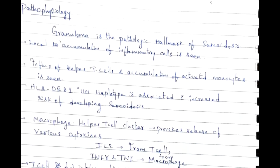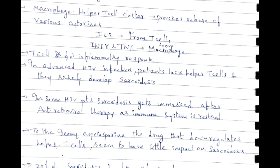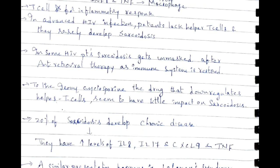Regarding pathophysiology, granuloma is the pathological hallmark of sarcoidosis. There is local accumulation of inflammatory cells — influx of helper T-cells and accumulation of activated monocytes. HLA-DR-B1 (1101 haplotype) is associated with increased risk of sarcoidosis. The macrophage–helper T-cell cluster provokes release of cytokines: IL-2 from T-cells, interferon-gamma and TNF from macrophages, which are critical for the inflammatory response.